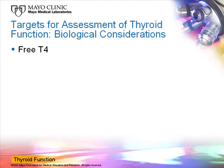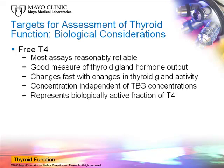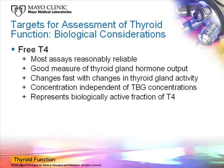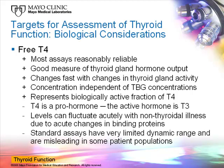The free hormone measurements can obviously address some of the shortcomings of the total hormone measurements. They are also, at least for free T4, reasonably reliable, give a good measure of the thyroid gland hormone output, change fast with thyroid gland activity, and most importantly are independent of TBG concentrations — representing the biologically active fraction of T4. However, for free T4, the same goes as for total T4 in that it is a pro-hormone, the active hormone is T3, and levels can occasionally fluctuate with non-thyroidal illness when binding protein levels change very rapidly and it takes a while for a new equilibrium to be established. Standard assays again have a very limited dynamic range, and at some ranges of binding protein concentrations they may be unreliable.